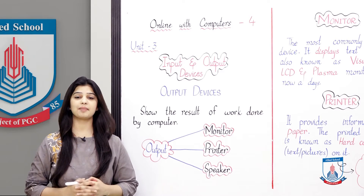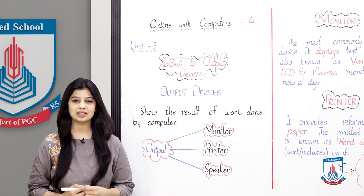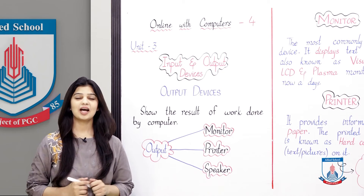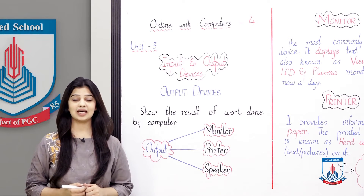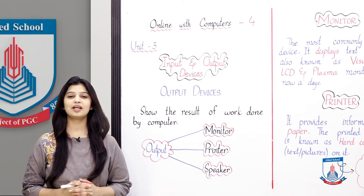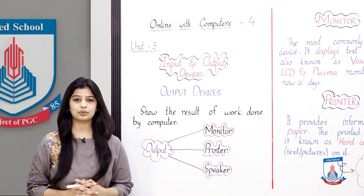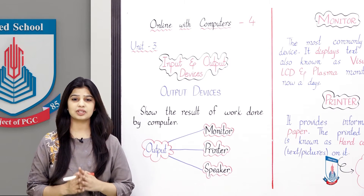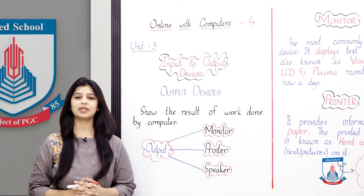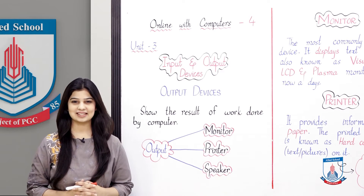Now, after processing, the results that are shown to us — what do we call that? We call it Output. These are shown through Output Devices.